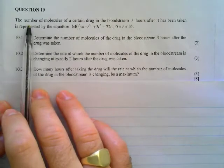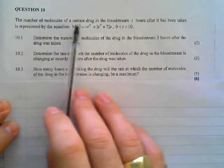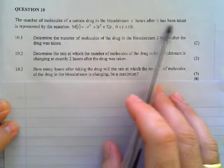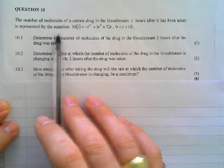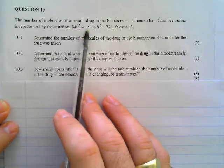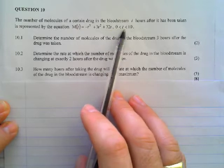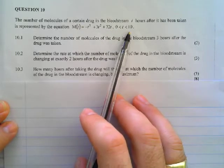The first one says the number of molecules of a certain drug in the bloodstream T hours after it has been taken is represented by the equation M(T) = -T³ + 3T² + 72T, and T has to lie between 0 and 10.